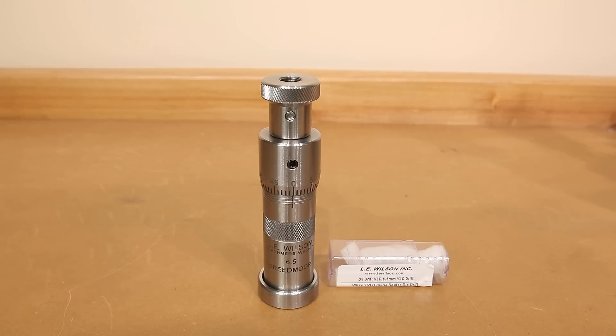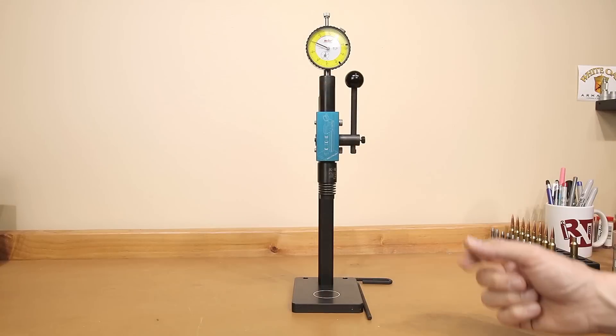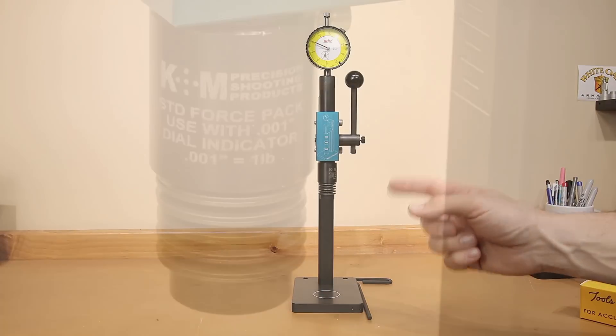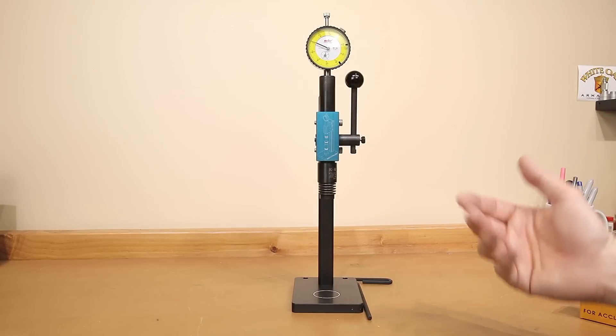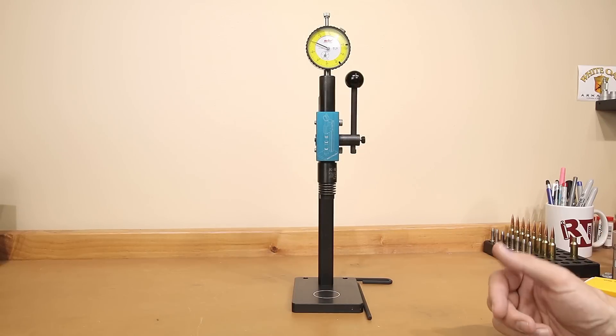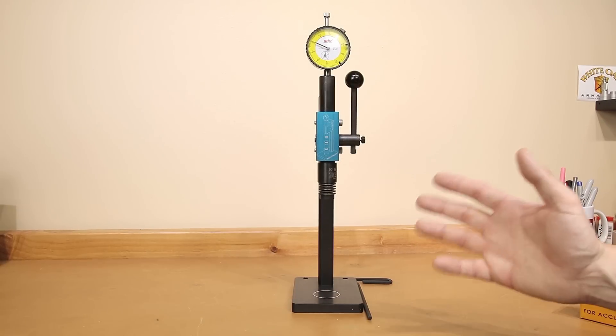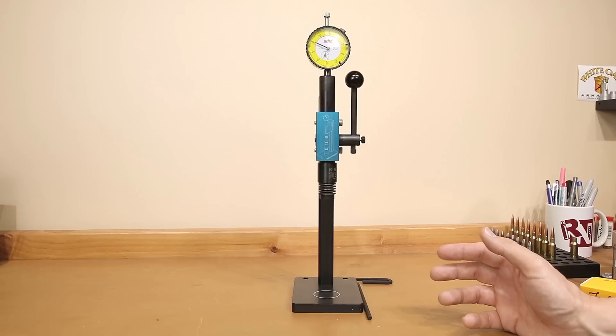This is a K&M arbor press. It does have the standard force pack option. So if you just want to seat projectiles and you don't want to know how much force you're using, you can buy it without that option. But what fun would that be? The model we have here does have the standard force pack. If you're using very light neck tension, you may want to go with the lower force pack.